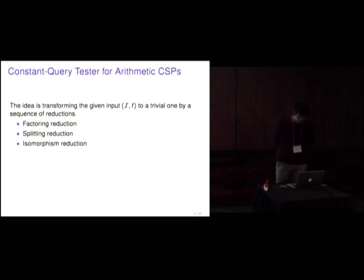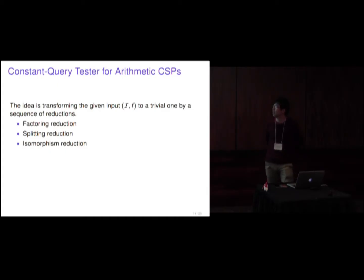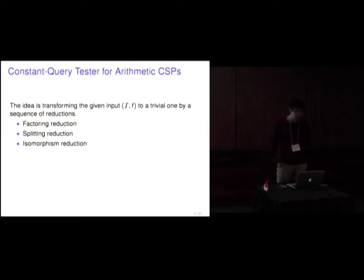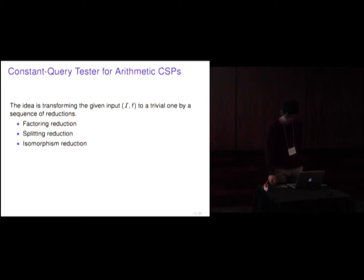Let's look at our algorithm. The idea is transforming the given input (I, F) to a trivial one by a sequence of reductions. We have three reductions: factoring reduction, splitting reduction, and isomorphism reduction.